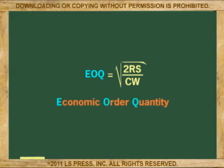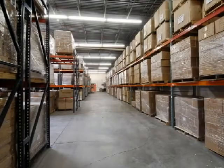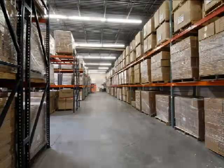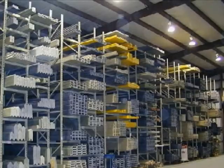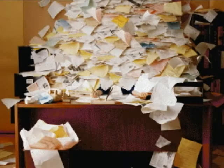The EOQ is based on the balancing act between keeping a low inventory at hand against ordering too many times. If the inventory is too large, we pay too much for rent, insurance, and utilities. But if we want a low inventory, we would have to order constantly, which increases paperwork, invoices, phone calls, and shipping.